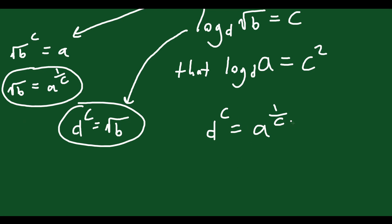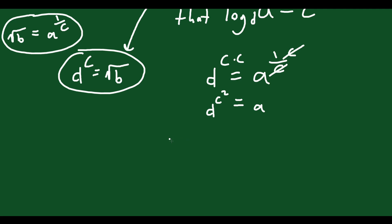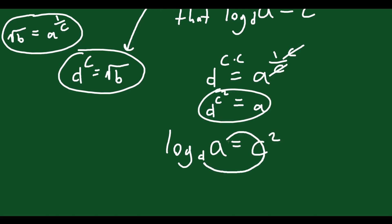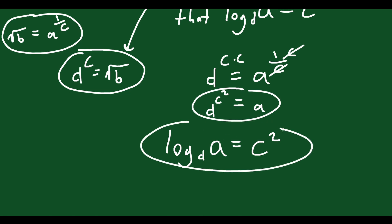If you raise both sides to the exponent c, the c's cancel, leaving a equals d to the c squared. What can we do with that? You can rewrite it as a logarithm: log base d of a equals c squared — because going around the horn, d to the c squared equals a. I just changed that exponential into a logarithmic statement.